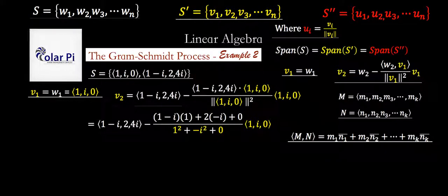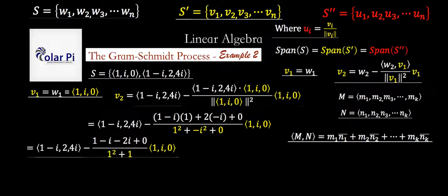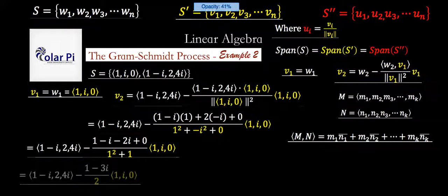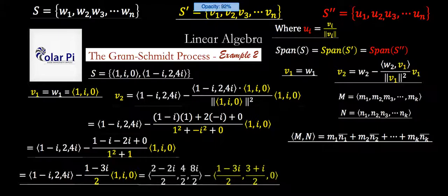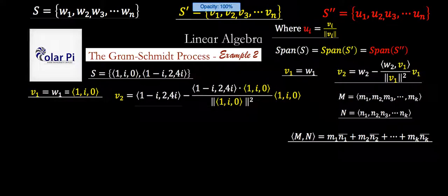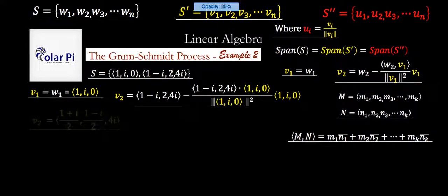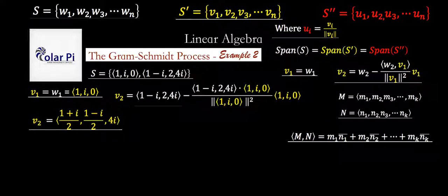And then simplifying this, we get this here. Simplifying a little bit more, we get this here. Simplify again, and get this here. Kind of on the home stretch, right? Now we just subtract corresponding entries, and we're going to be able to get our vector V2, which is going to be perpendicular to V1. All right, so there is V2, and you could use this here, this inner product defined, and use it between V1 and V2 to check that they are in fact orthogonal or perpendicular as we expected.